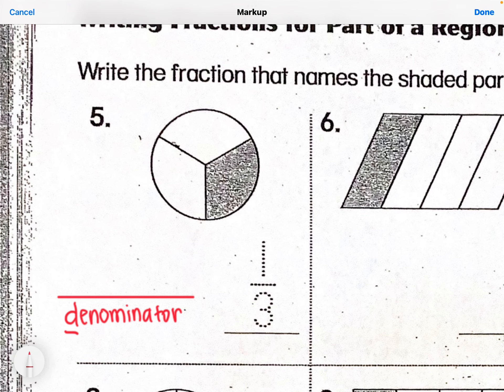And then the numerator is the one that is above the line. I just remember that because it's not the denominator — there's really no way to remember that, so if you think of one, let me know! So my top number is the numerator, and my bottom number is the denominator. The denominator tells me how many total equal pieces there are.